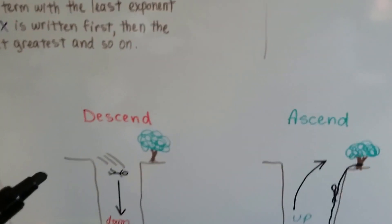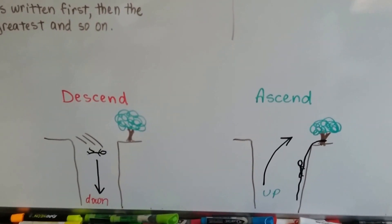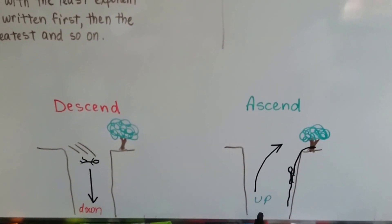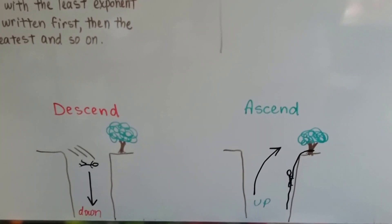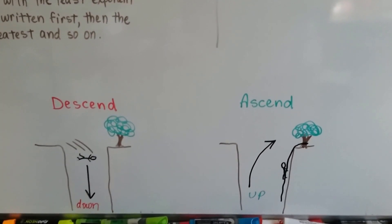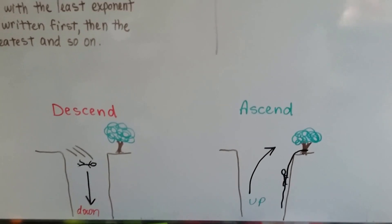So remember that to descend means to go down, ascend means to go up. You can descend the stairs when you go down the stairs, you can ascend the stairs when you climb up the stairs.